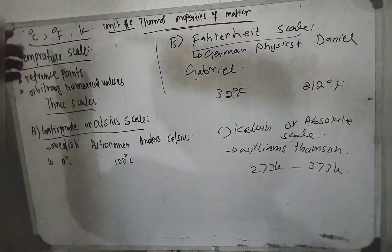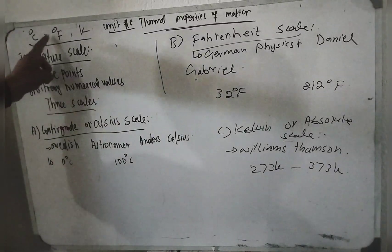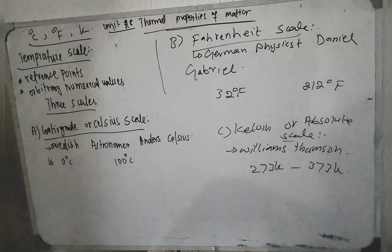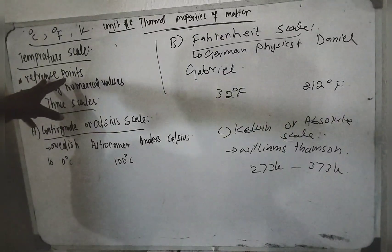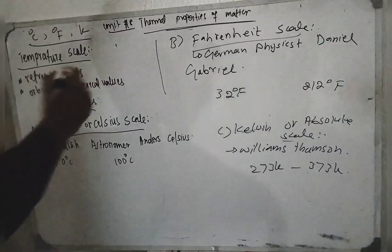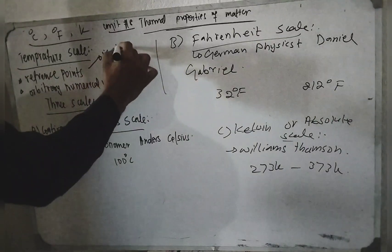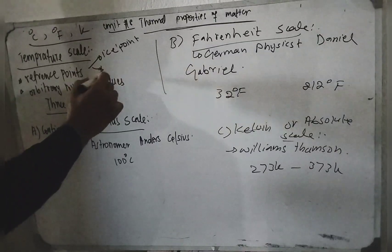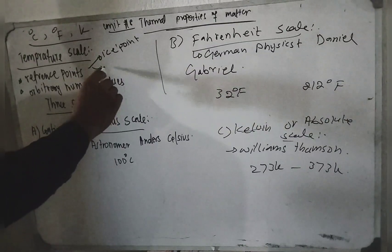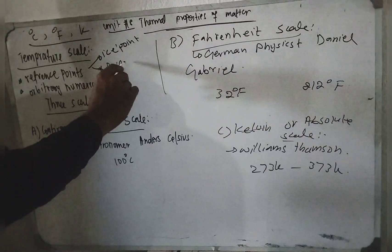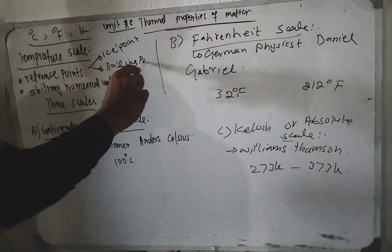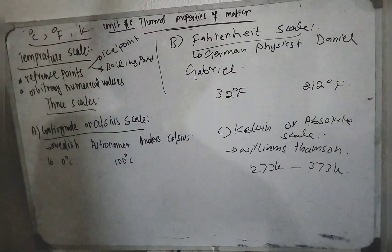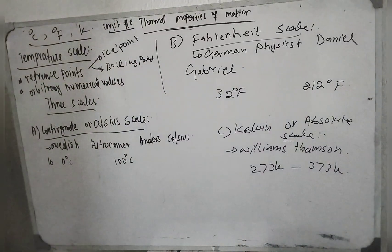Temperature scale — the reference points are two points: the ice point and the boiling point. Each temperature scale uses these two fixed reference points. The ice point and the steam boiling point are used to define and calibrate the scale.